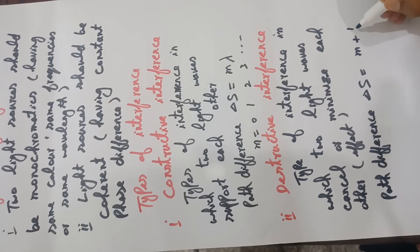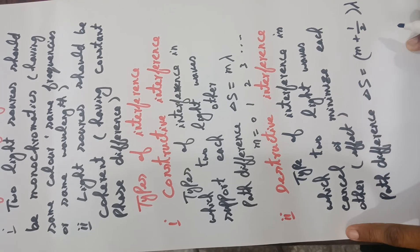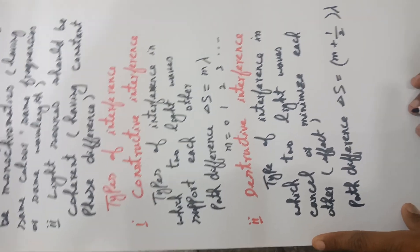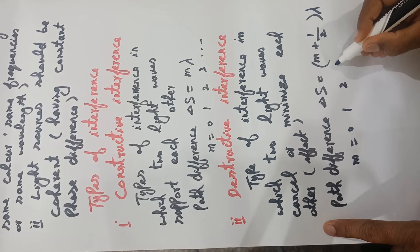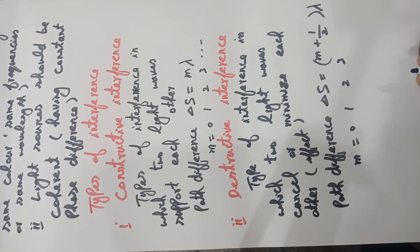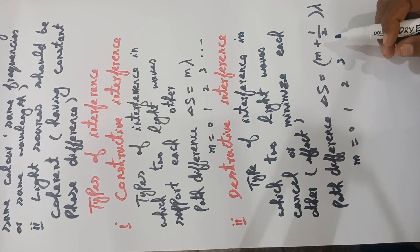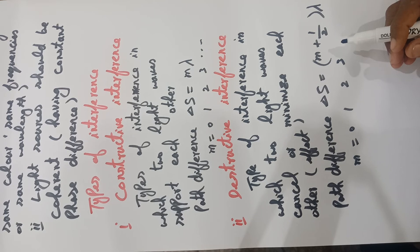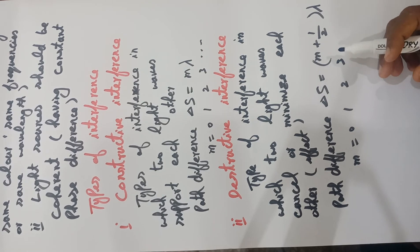The path difference is (m + ½)λ, where m is an integer whose value is 0, 1, 2, 3, and so on. If we put m = 0, we get path difference λ/2. When m = 1, path difference is 3λ/2. This means for destructive interference, the path difference between two light waves is equal to an odd integral multiple of λ/2.